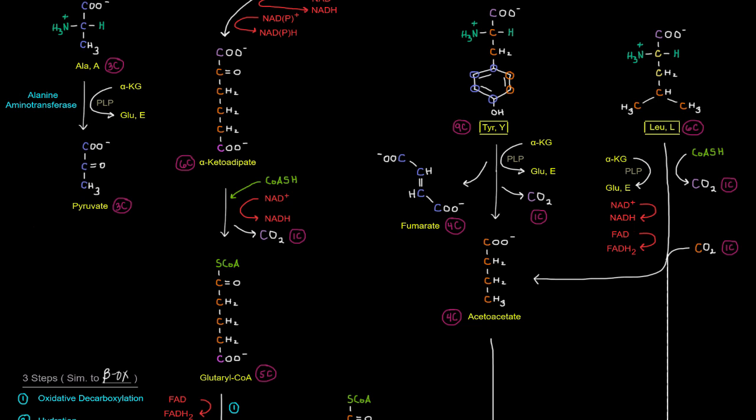And one of them, that carboxyl group carbon up there, will leave as a carbon dioxide. And we lost the amino group in a transamination reaction here to get acetoacetate.